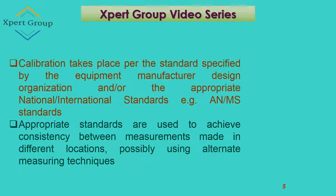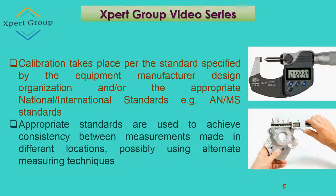Appropriate standards are used to achieve consistency between measurements made in different locations, possibly using alternate measuring techniques. For example, a digital micrometer is used for accurate, specified kinds of measurement and needs to be calibrated after a certain period of time. Similarly, a digital vernier caliper also needs to be calibrated after a certain period of time, because calibration makes it conform to a standard for producing standard measurements.